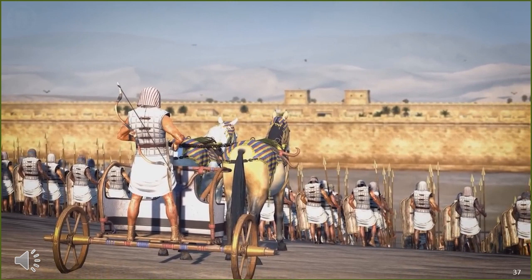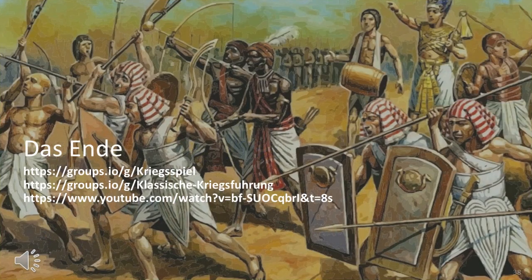With the battle ending and the main Canaanite army escaping into the city, the Egyptians were forced into a long siege of six to nine months, after which the Canaanites surrendered. It must be pointed out that this account is based on Egyptian sources, so maybe somewhat embellished to make the Egyptians look better. But nonetheless, the Egyptians did win the battle, did take the city eventually, and it marked the high watermark of the Egyptian empire. This concludes part 21 of my military history series, covering the Battle of Megiddo.